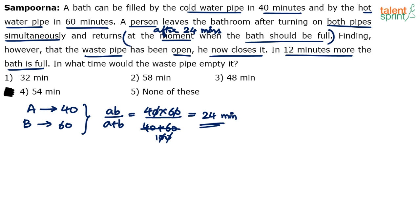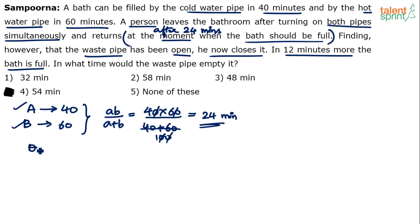Both inlet pipes A and B together can fill the bath in 24 minutes. This person comes after 24 minutes and realizes that for those 24 minutes, not only A and B were kept open but also the waste pipe — the outlet pipe. So in the first 24 minutes, three pipes were working: inlet pipe A, inlet pipe B, and the outlet pipe. He then closes the outlet pipe after 24 minutes.